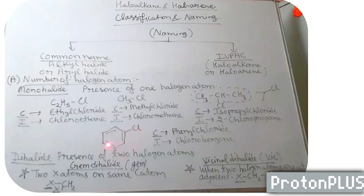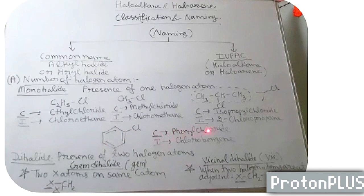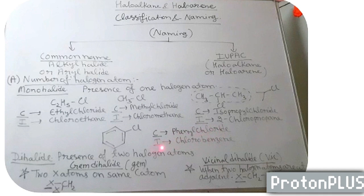If we take the example of an aromatic halide — that is benzene along with one halogen atom, that is chlorine — the common name is phenyl chloride, that is C6H5Cl. The IUPAC name is chlorobenzene.